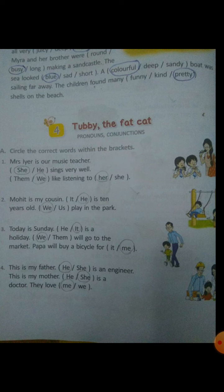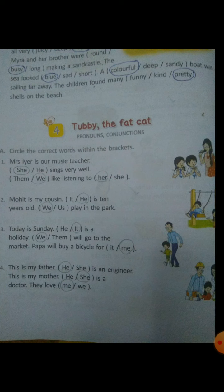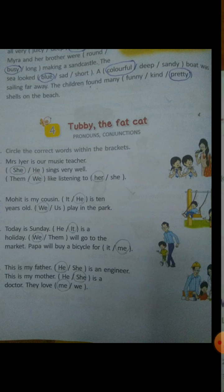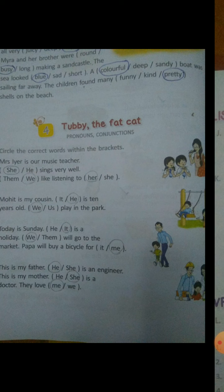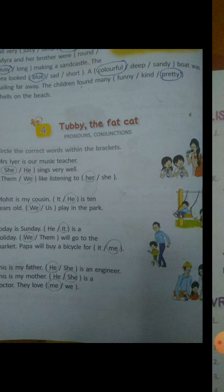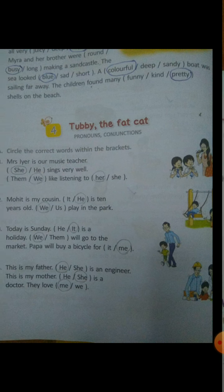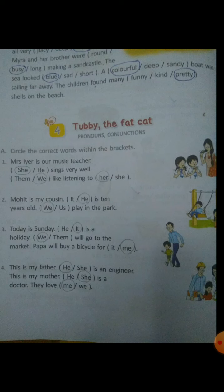Words that are used to connect. For example, Ram and Sita — the word and connects Ramu and Sita. It is raining, but it is very hot today — two sentences connected by the word but. It is raining, but still it is hot today. These are conjunctions.